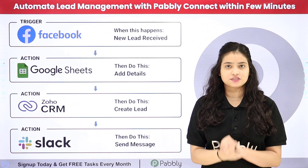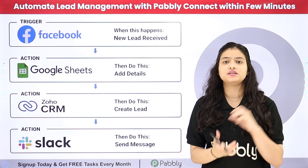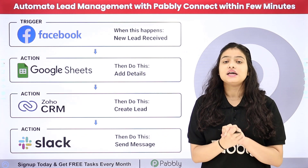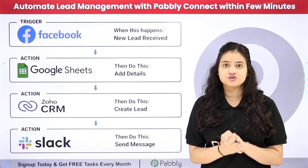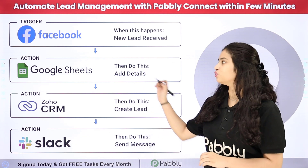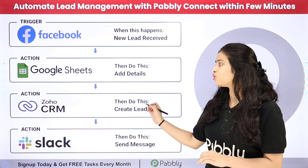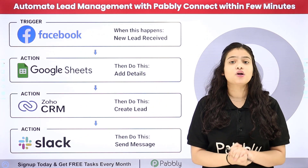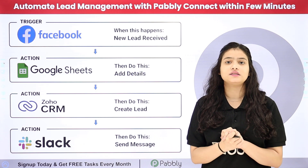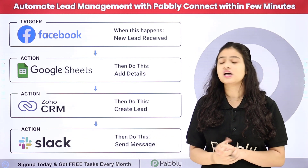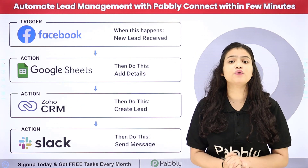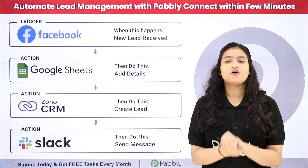Let's suppose I am using Facebook lead ads to generate leads and promote my business. As the lead is generated, I want to record the lead details in Google Sheets, add the lead in Zoho CRM, and also inform my team members about the lead details on a Slack channel. So how are we going to automate this entire process?